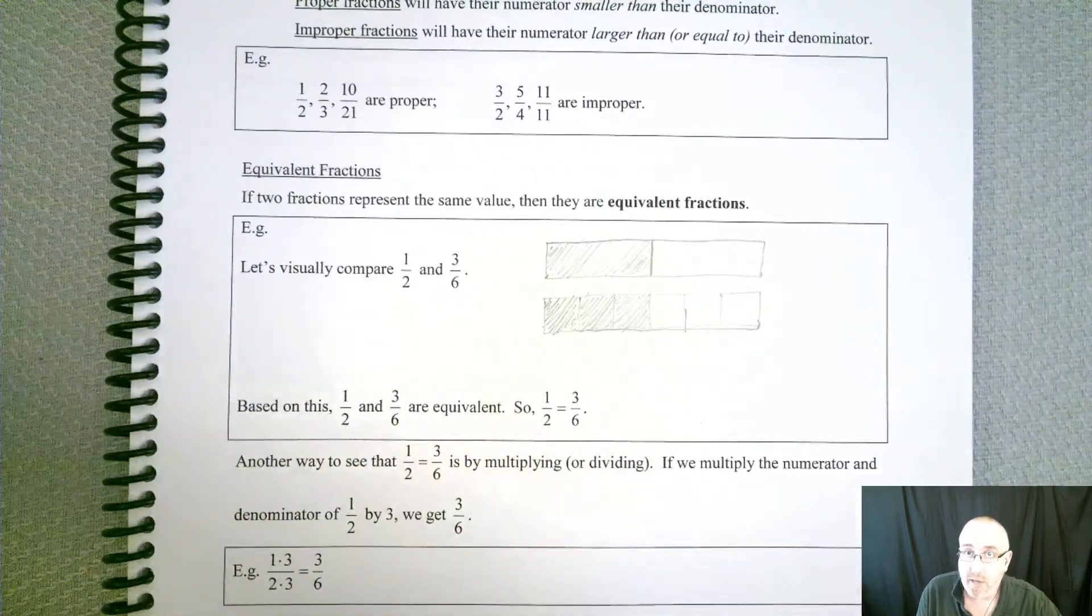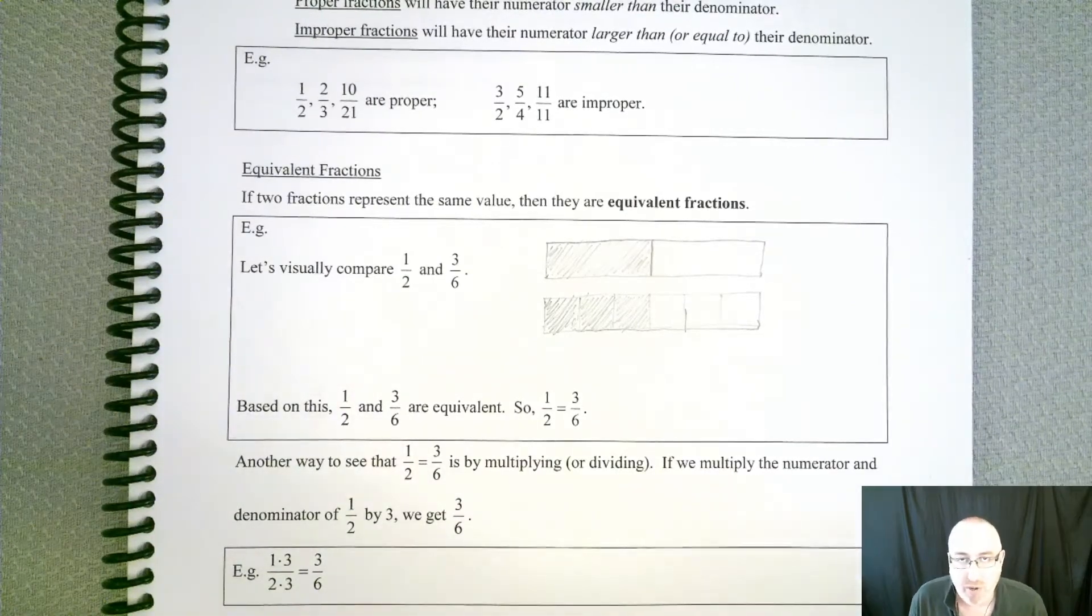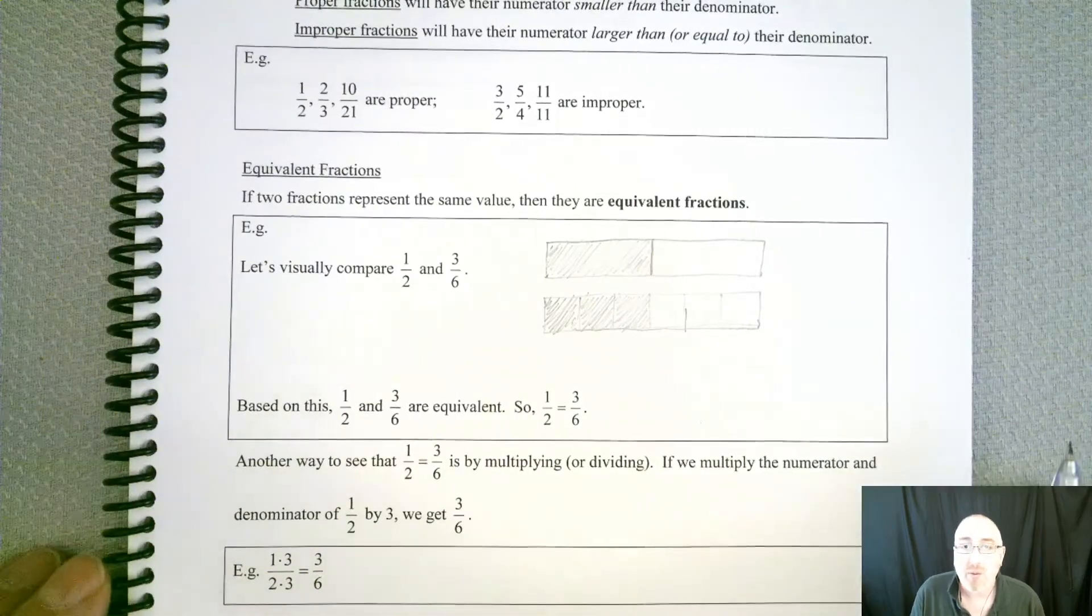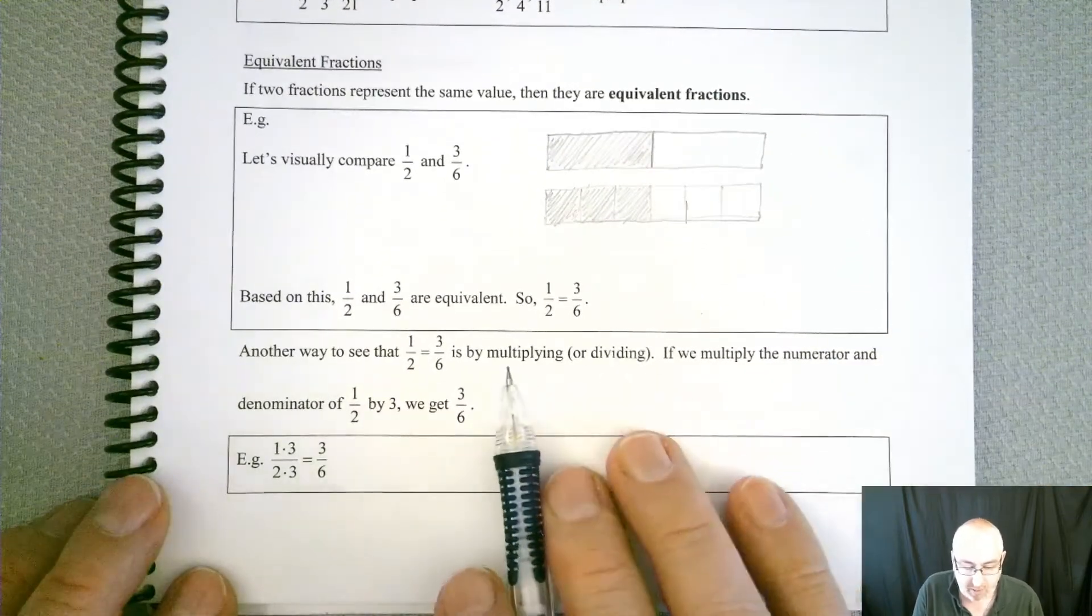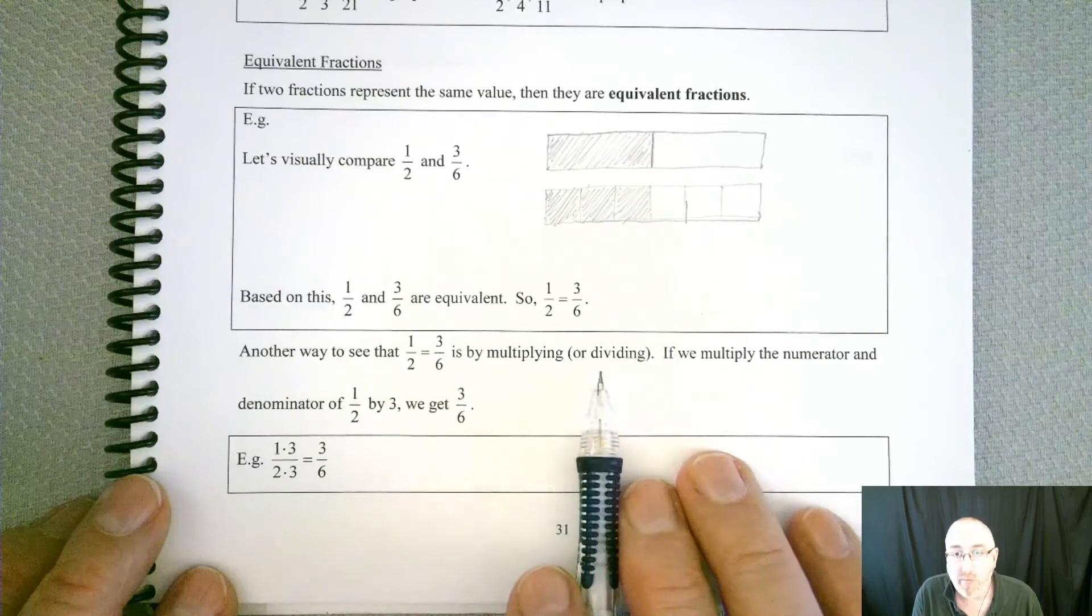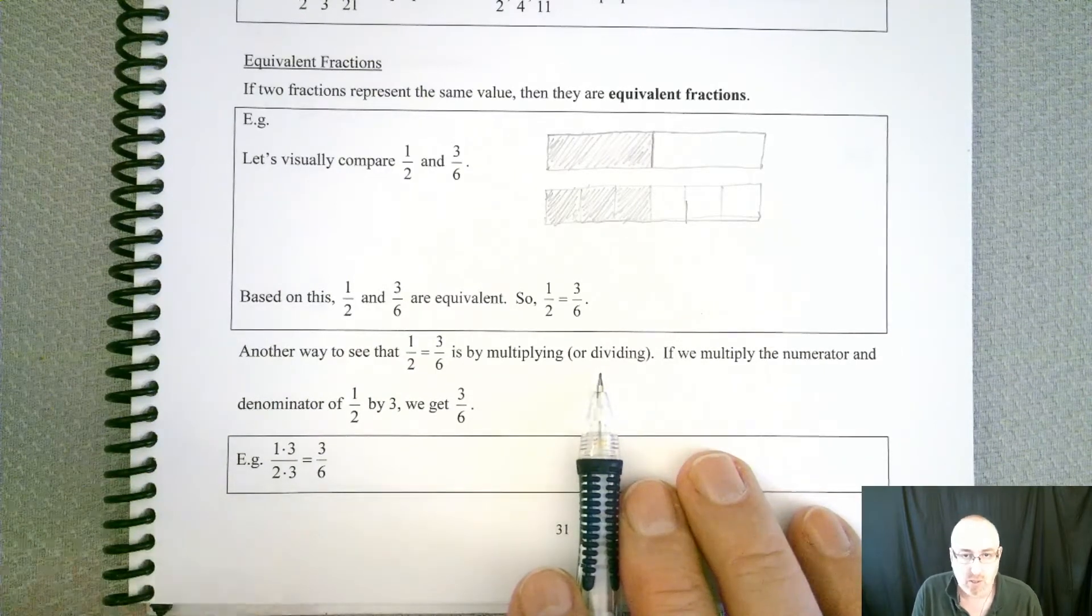You can see visually, because we started off with the overall same size box, I chopped this one into two, I chopped this one into six, I shaded one, shaded three. It's the same amount. So we can clearly see that these two fractions have to be equivalent.